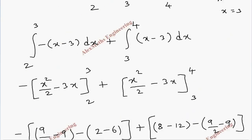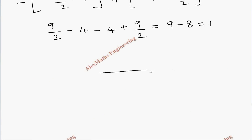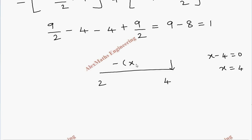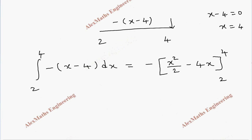Coming to I3, we have |x minus 4| with limit from 2 to 4. Equating x minus 4 to 0 gives x equals 4, which is at the boundary. After 4 it is positive, but before 4 it is negative throughout the interval. So the integral from 2 to 4 becomes only minus(x minus 4) dx, and integrating gives x squared by 2 minus 4x.